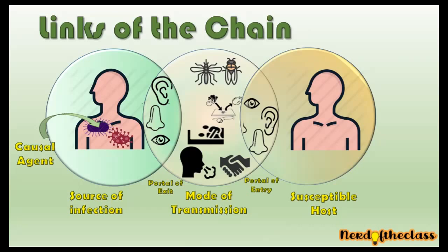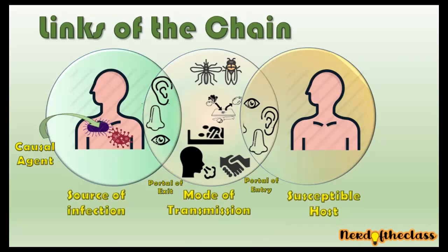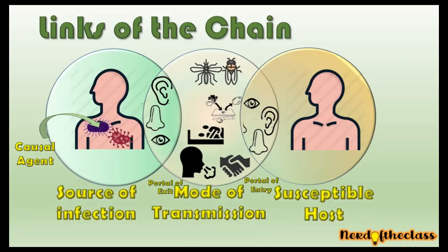However, more recent models consider that the proper links are: source of infection, mode of transmission, and susceptible host. The causal agent, portal of exit, and portal of entry are more like parts of the other links, and only those three big links are the actual proper links of the chain.